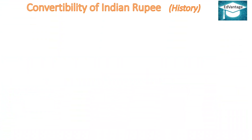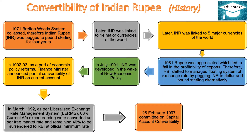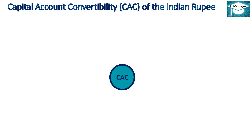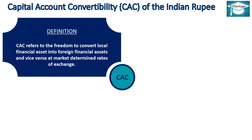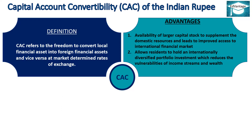Convertibility of Indian Rupee: The history of convertibility of the Indian rupee is as follows. Capital Account Convertibility (CAC) of the Indian rupee — Definition: CAC refers to the freedom to convert local financial assets into foreign financial assets and vice versa at market-determined rates of exchange. Advantages: Availability of larger capital stock to supplement domestic resources, improved access to international financial markets, and allows residents to hold an internationally diversified portfolio investment, which reduces vulnerabilities of income streams and wealth. Quality of financial assets improves due to greater liquidity and widening of the market.